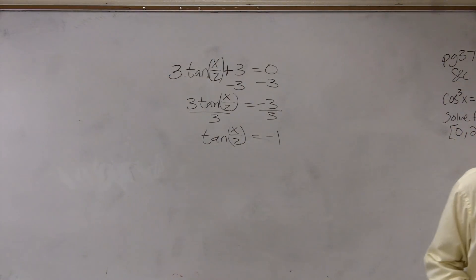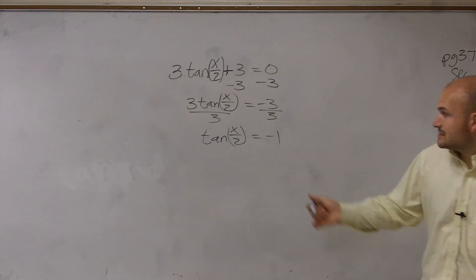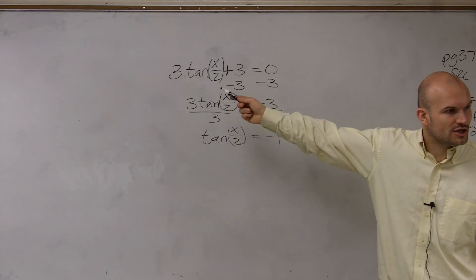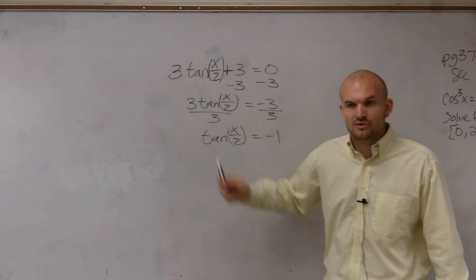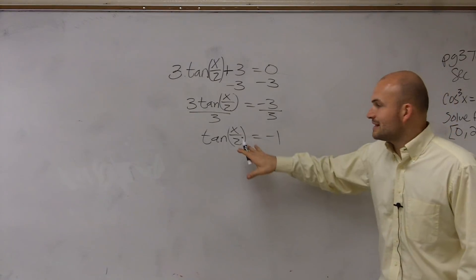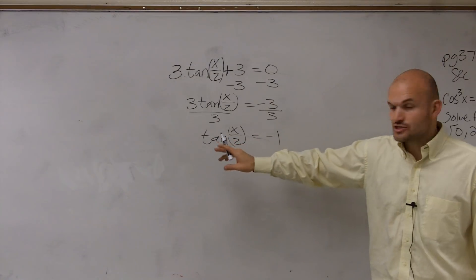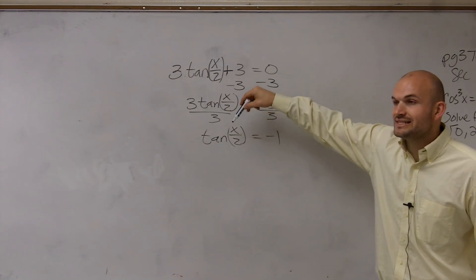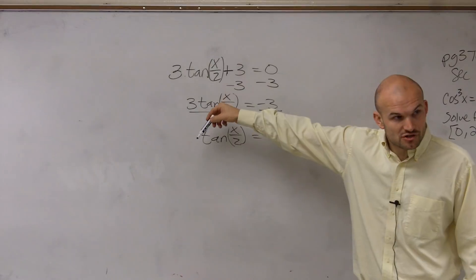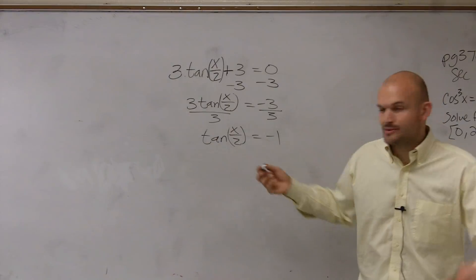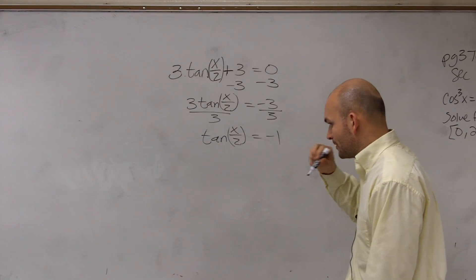Now, one of the more common mistakes that students make is they look and they say, oh, well, we need to get rid of that 2. You need to undo that so maybe you'll multiply by 2 on both sides. But you guys need to remember that this 2, that is inside the function. So that 2, that's the tangent, which is a function operation. That's the tangent of x divided by 2. So we can't just multiply that outside of it. And let me go and explain my point.